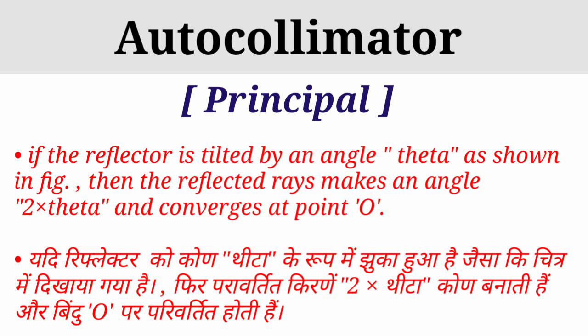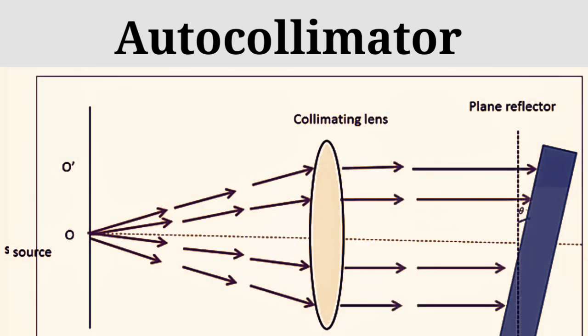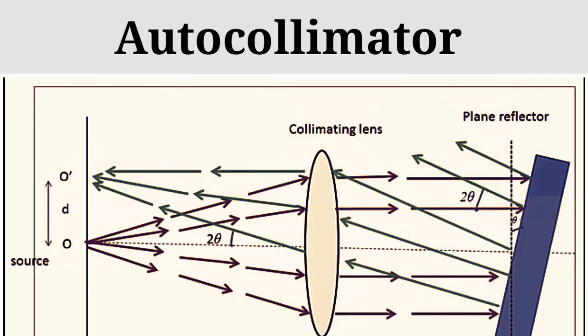If the reflector is tilted by an angle theta, as shown in the figure, then the reflected rays make an angle 2-theta and converge at point O. यदि reflector theta कोण पर tilt हुआ है, तो जो rays आकर टकराएंगी वो 2-theta angle पर reflect करती हैं। यह principle हम पहले से जानते हैं कि अगर कोई भी reflecting plane किसी angle पर move होता है तो reflection उससे double angle पर होता है। अगर आपने theta angle पर plane tilt किया है तो reflection 2-theta होगा।